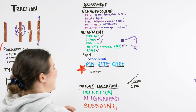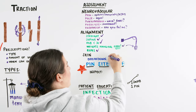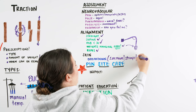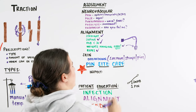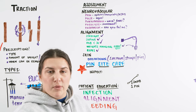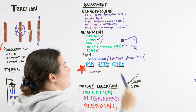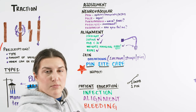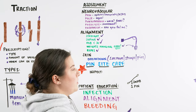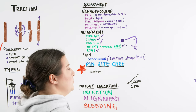Moving into skin assessment, we want to check for breakdown. Check the patient's backside and sacrum, and also check under all straps and around any pins. If straps are showing skin breakdown, they may be too tight — this can be corroborated with the neurovascular checks. For patients with pins holding bones in place, check around the pin sites for any breakdown, as this could indicate early signs of infection that we need to report and have the provider assess at bedside.